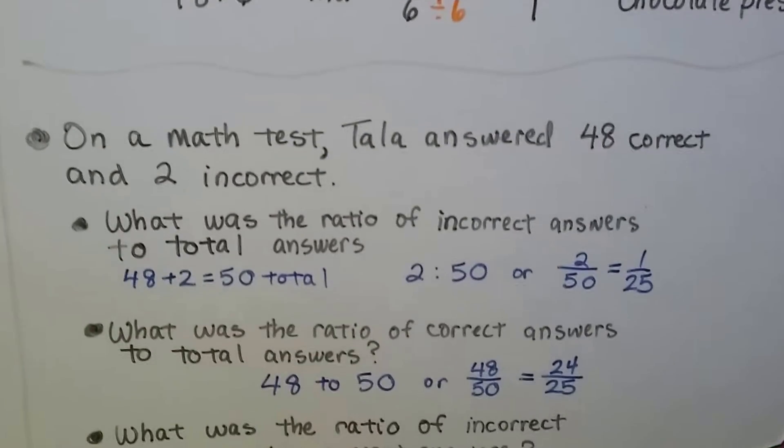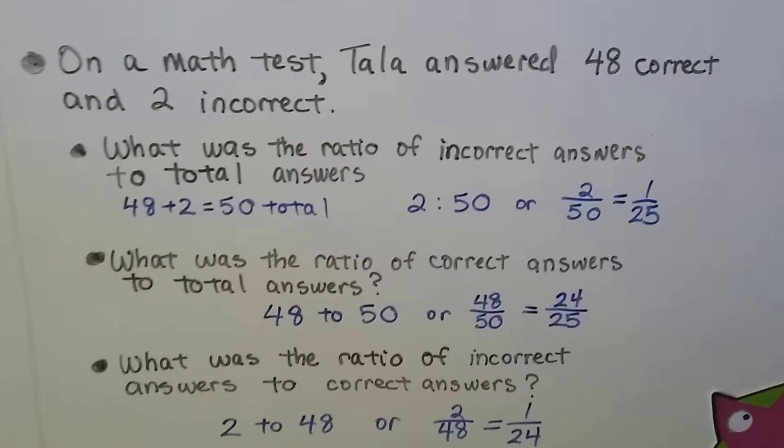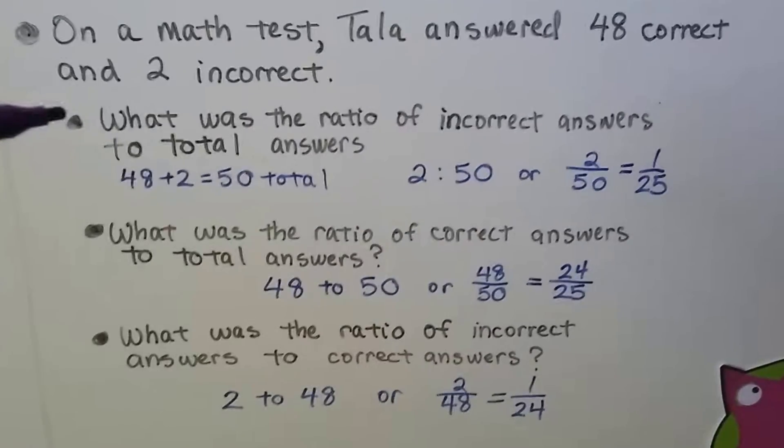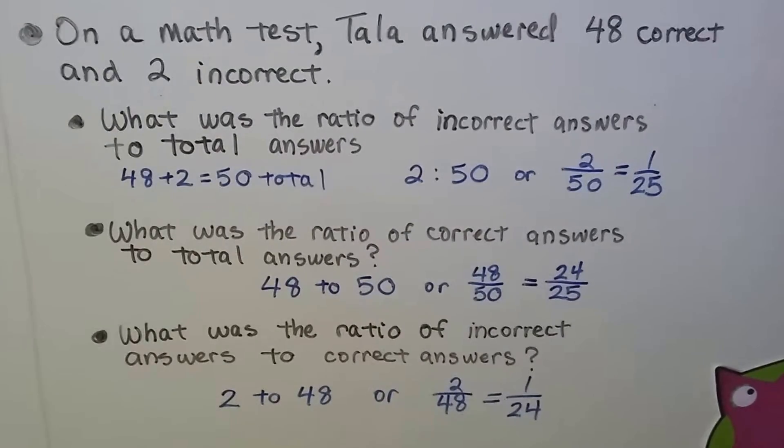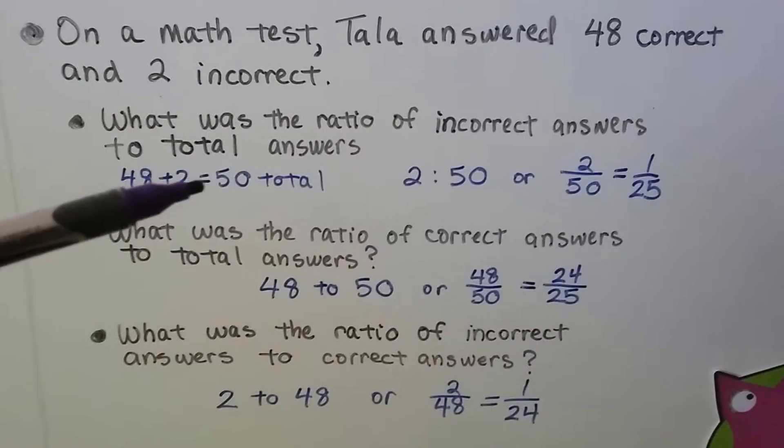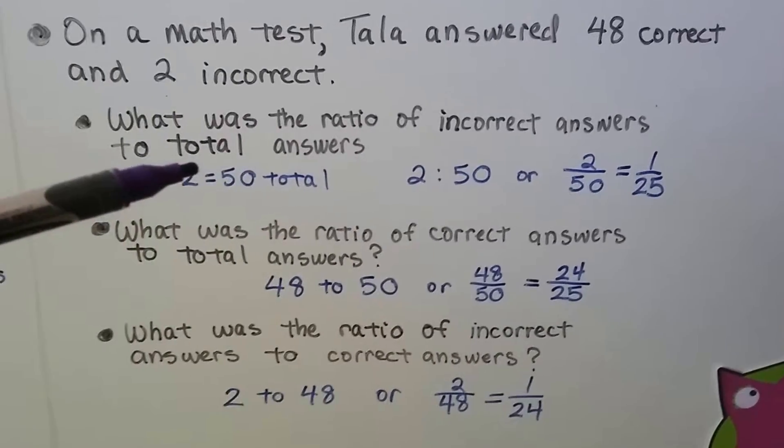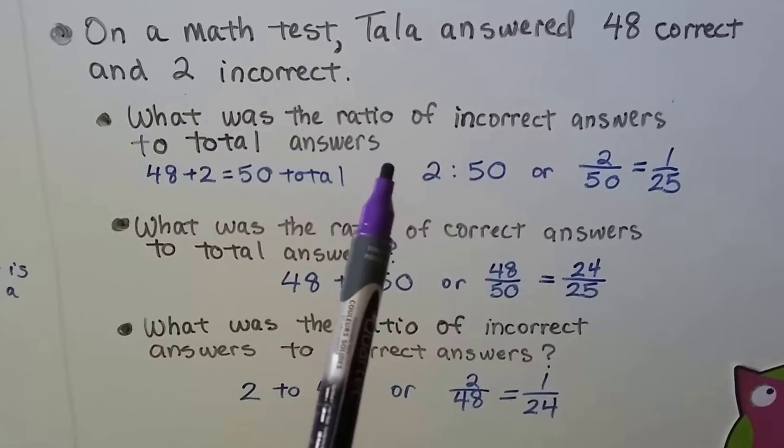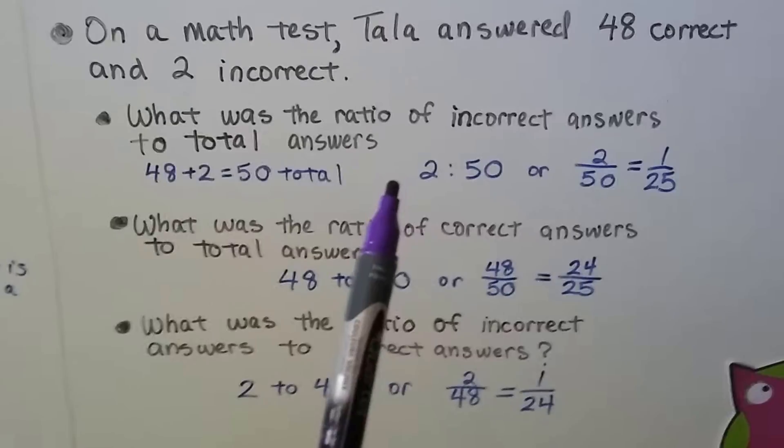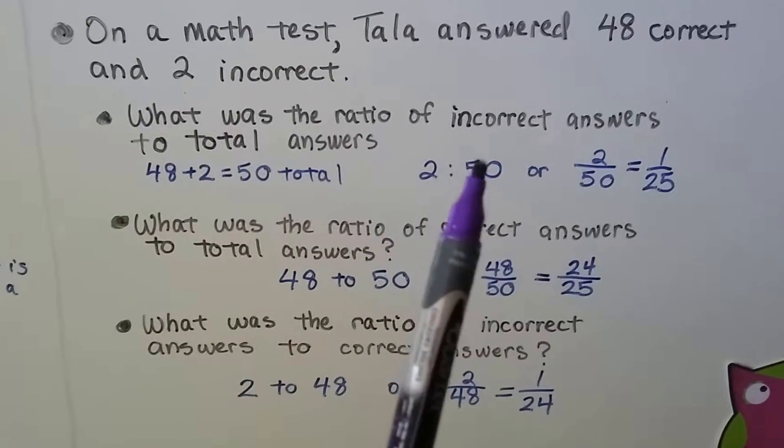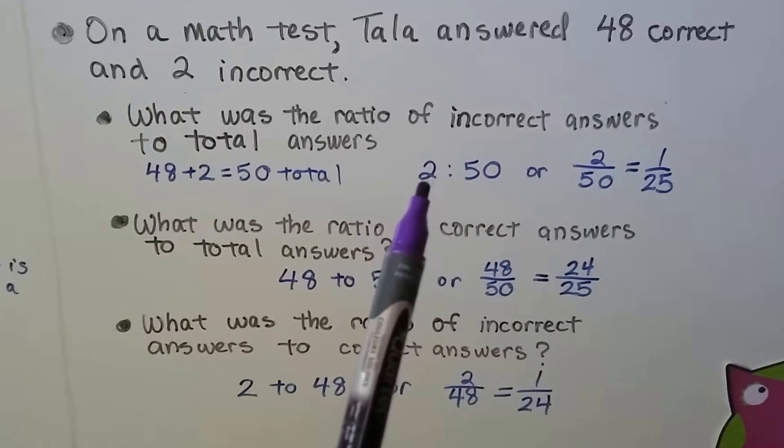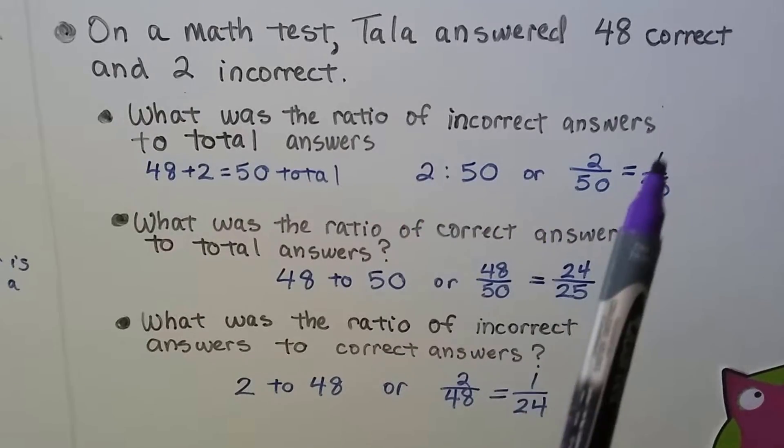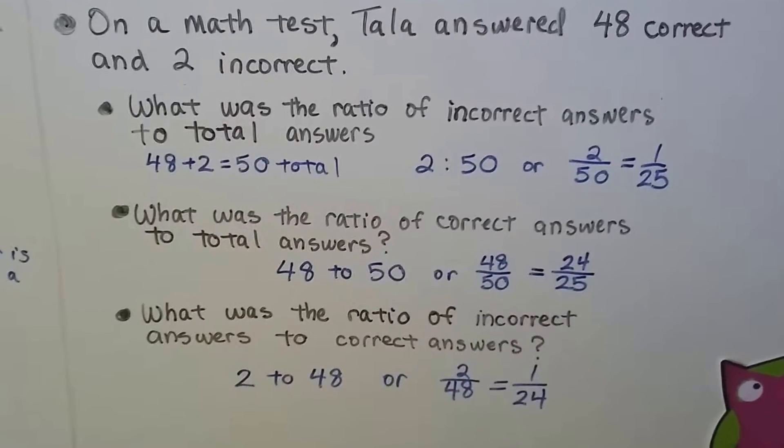On a math test, Tala answered 48 correct and 2 incorrect. What was the ratio of incorrect answers to total answers? Now we have to add the 48 and the 2 to get the total answers. So there were 50 questions - 48 were correct and 2 were incorrect. The ratio of incorrect answers to total answers is 2 incorrect and the total was 50. So the ratio of incorrect to total is 2 to 50, which can be reduced to 1 to 25.